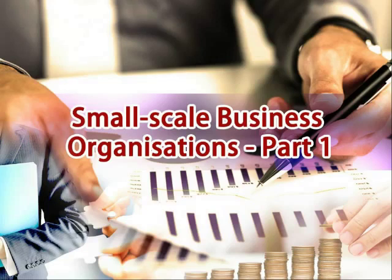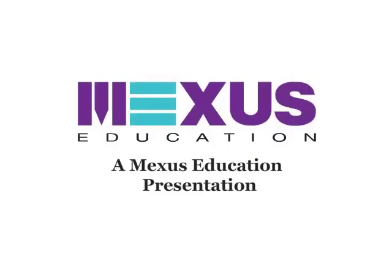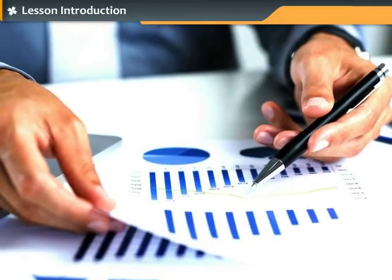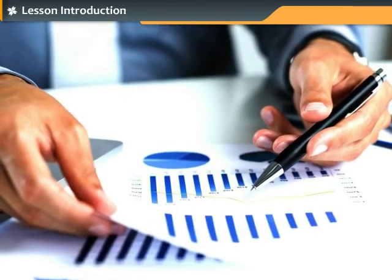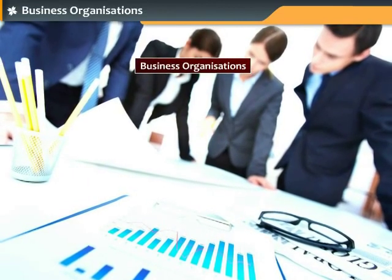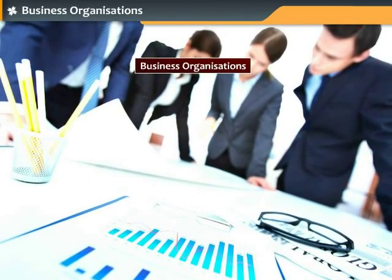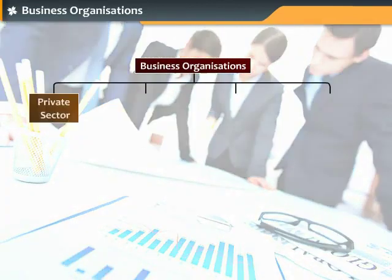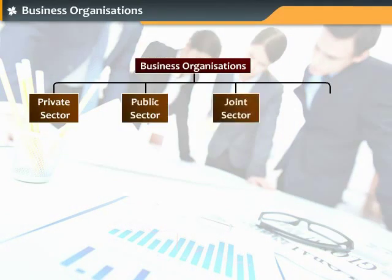Small-Scale Business Organizations Part 1. In this module, you will learn about sole trading concerns. Business organizations are broadly classified into four types: business organizations in private sector, business organizations in public sector, joint sector business organizations, and public utilities.